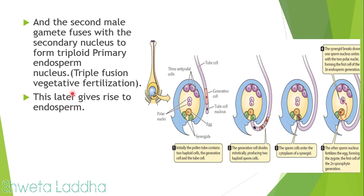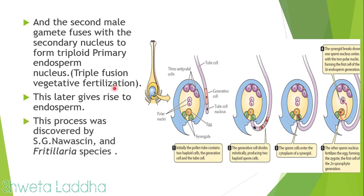To summarize: the first male gamete fuses with the egg — syngamy, the first fertilization — resulting in formation of the embryo. The second male gamete fuses with the secondary nucleus — triple fusion, vegetative fertilization — resulting in formation of endosperm.